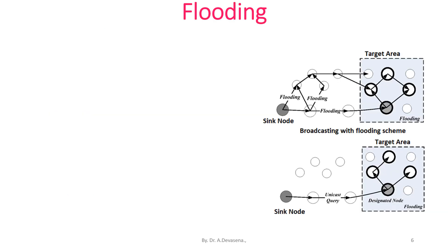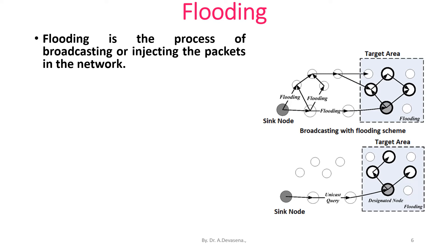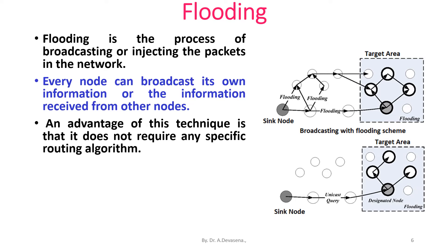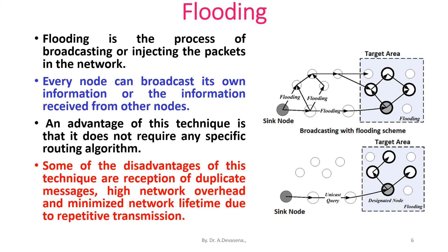Flooding is the process of broadcasting or injecting packets in the network. Every node can broadcast its own information or information received from other nodes. An advantage of this technique is that it does not require any specific routing algorithm. Disadvantages include reception of duplicate messages, high network overhead, and minimized network lifetime due to repetitive transmission.